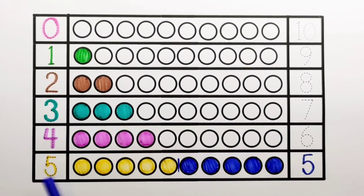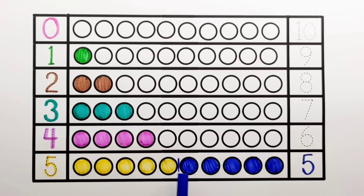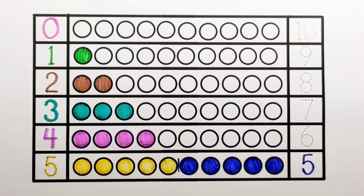5 and 5 makes 10. 1, 2, 3, 4, 5, 6, 7, 8, 9, 10. 5 plus 5 equals 10.